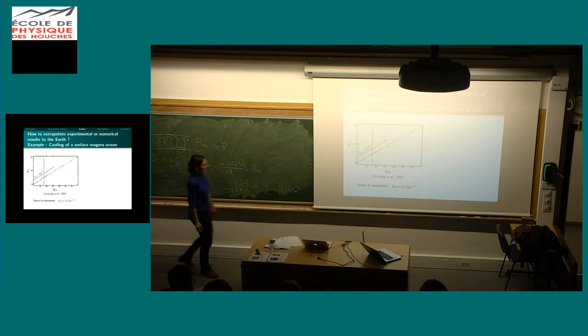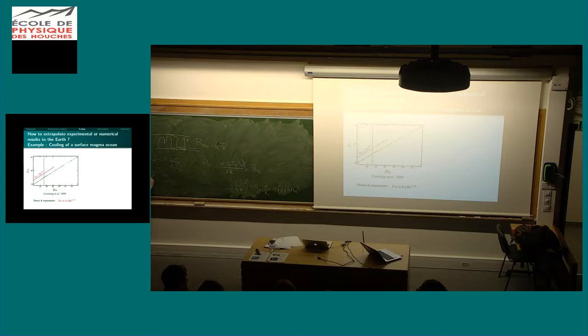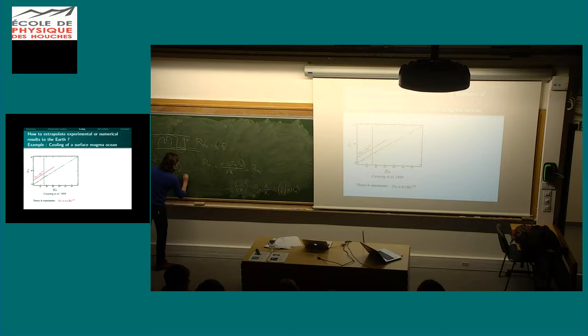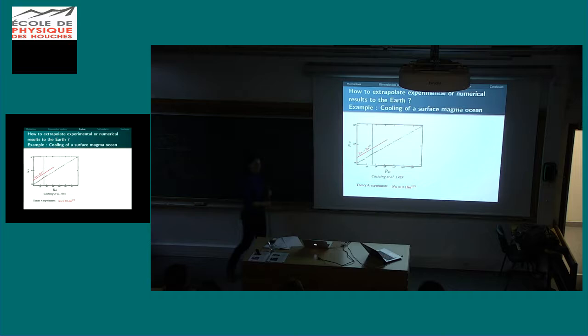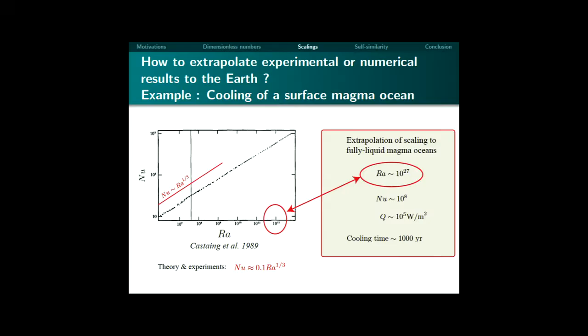So now if you rearrange this expression, you find that delta over h to the third is proportional to your critical Rayleigh number times 1 over the Rayleigh number of the system. You directly find that delta over h should evolve as the Rayleigh number to the minus one-third. Coming back to the definition of the Nusselt number — your heat flux divided by the conductive influx — you are left with h over delta. So you get that the Nusselt number should vary as Rayleigh to the one-third. You get a result which is quite close to what is expected from experiments. You need experiments and scaling laws, but it's also nice when you have some theoretical understanding so that you are confident you can extrapolate.